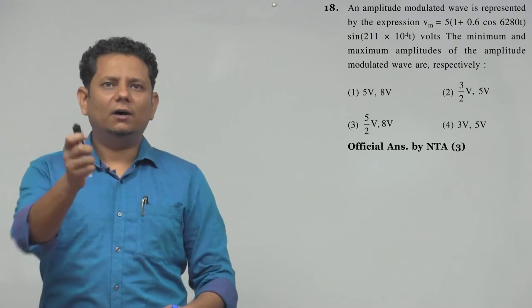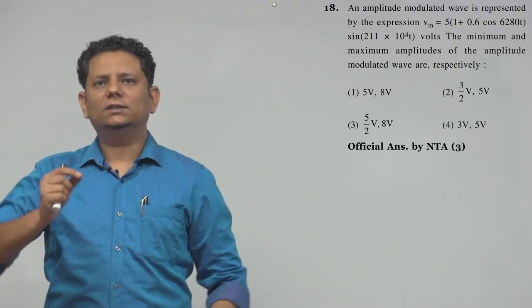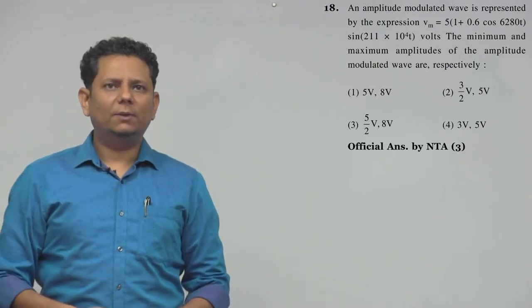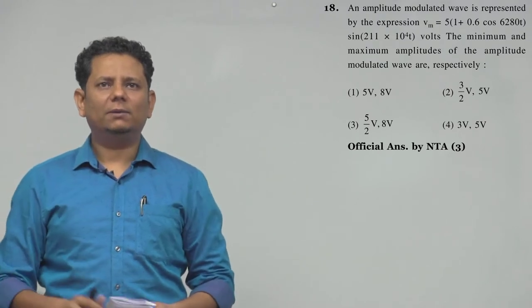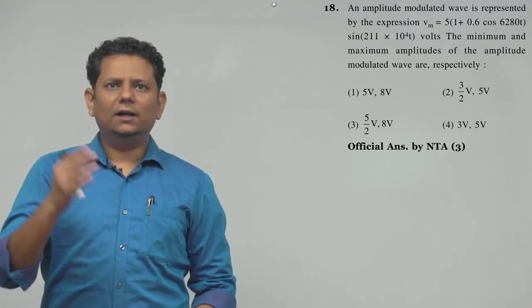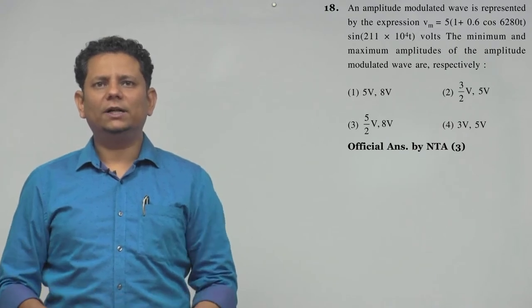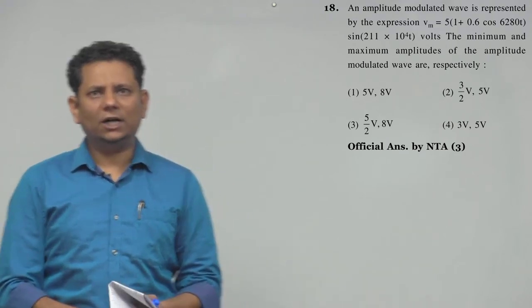Next question. An amplitude modulated wave is represented by the expression vm equals 5(1 plus 0.6 cos 6280t) multiplied by sine 211 times 10 to the power 4t volts. The minimum and maximum amplitude of the amplitude modulated wave are respectively. Four options.